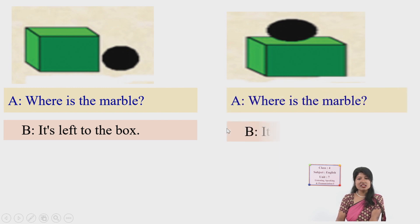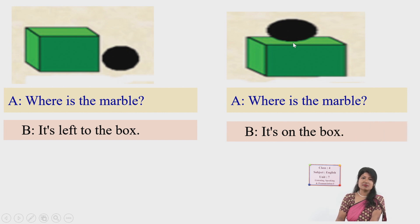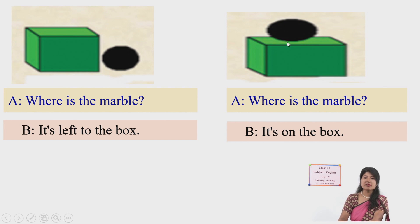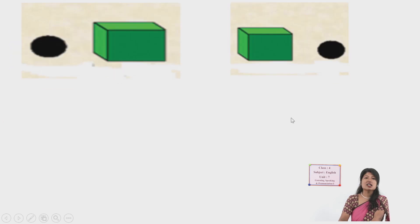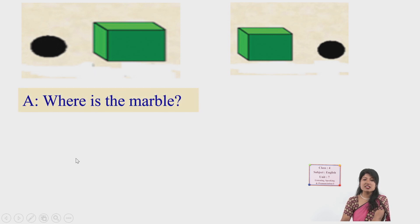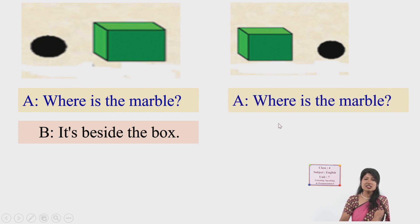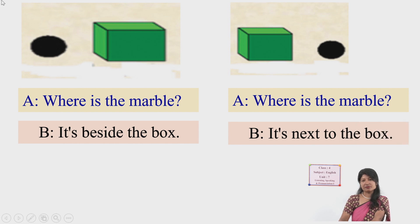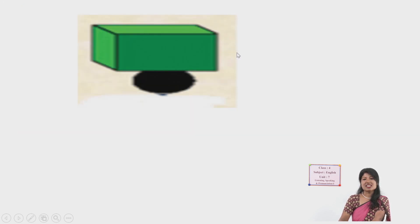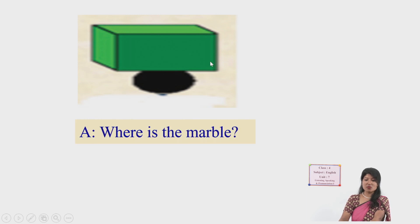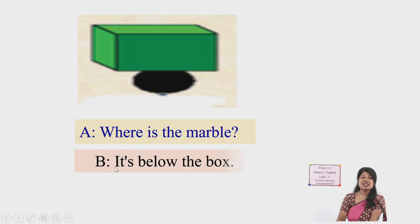Where is the marble now? It's in the box. Where is the marble in this picture? It's in front of the box. Next — where is the marble? It's next to the box — beside and next to mean the same. And in this picture? It's on the box — the marble touches the surface of the box. Where is the marble? It's beside the box. Next to the box. And the last one — it's below the box.